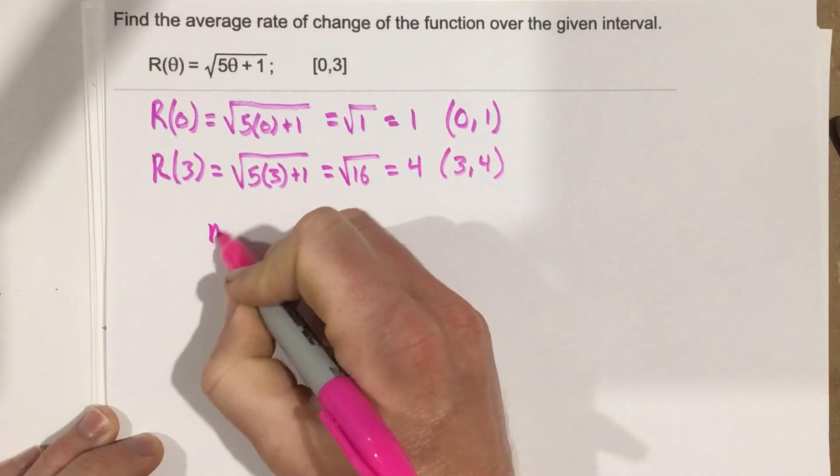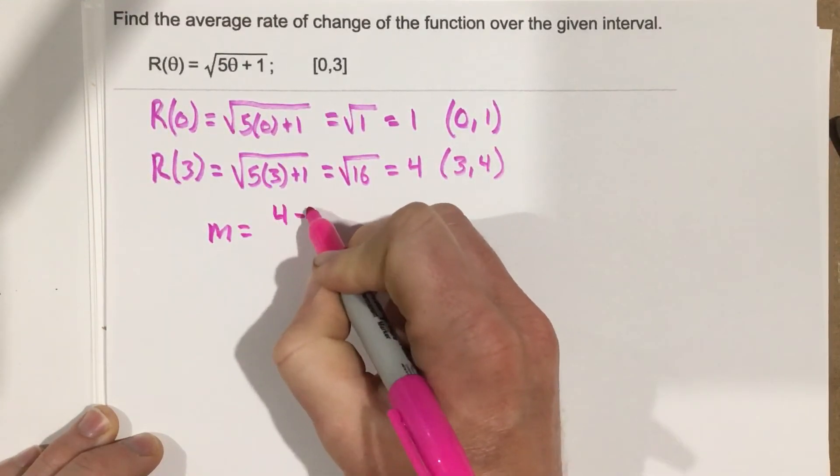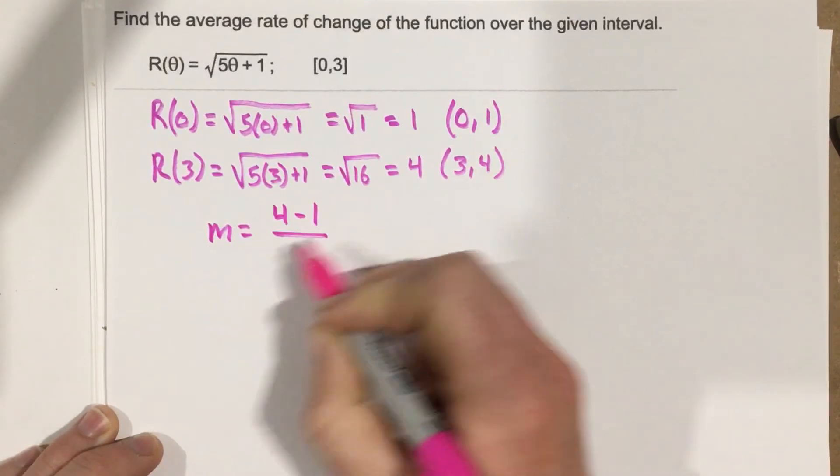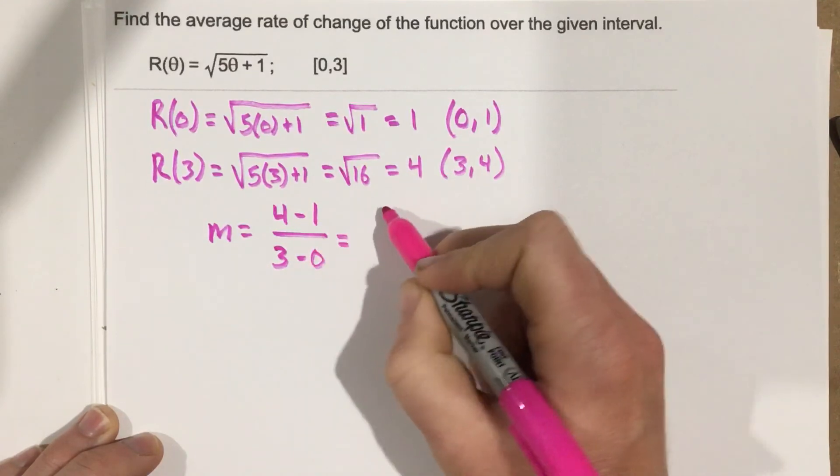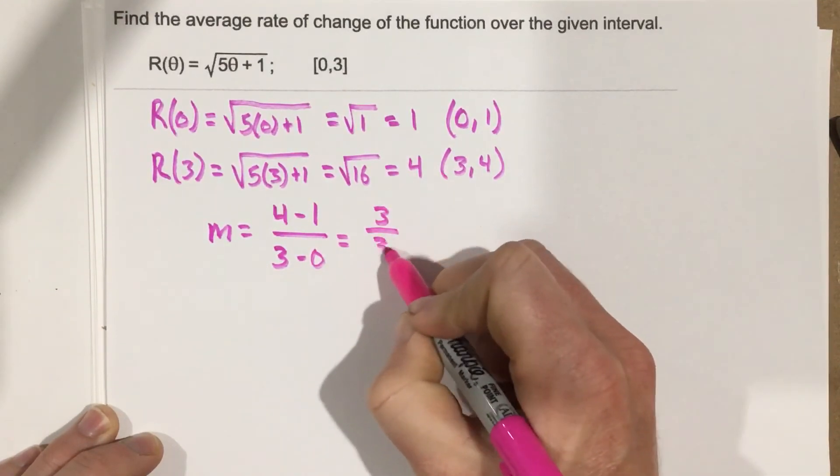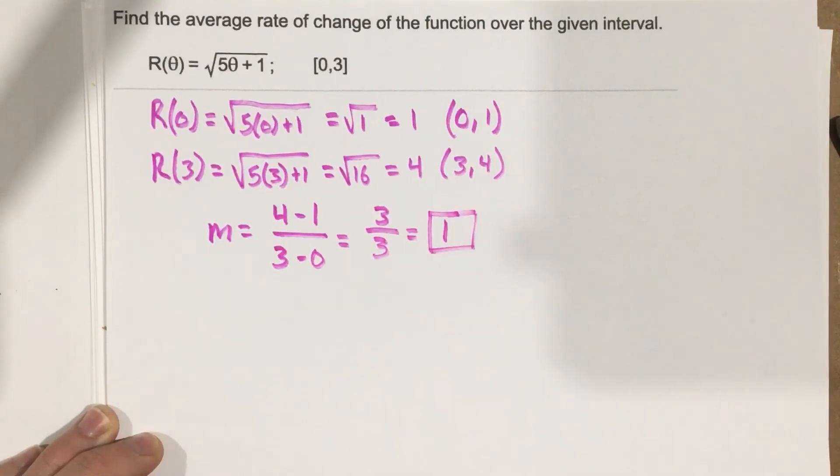Now let's find the slope from this. We're going to take 4 minus 1, because we're doing average rate of change. So we want to find slope 4 minus 1 over 3 minus 0. And we end up with 3 over 3. So our average rate of change here is 1.